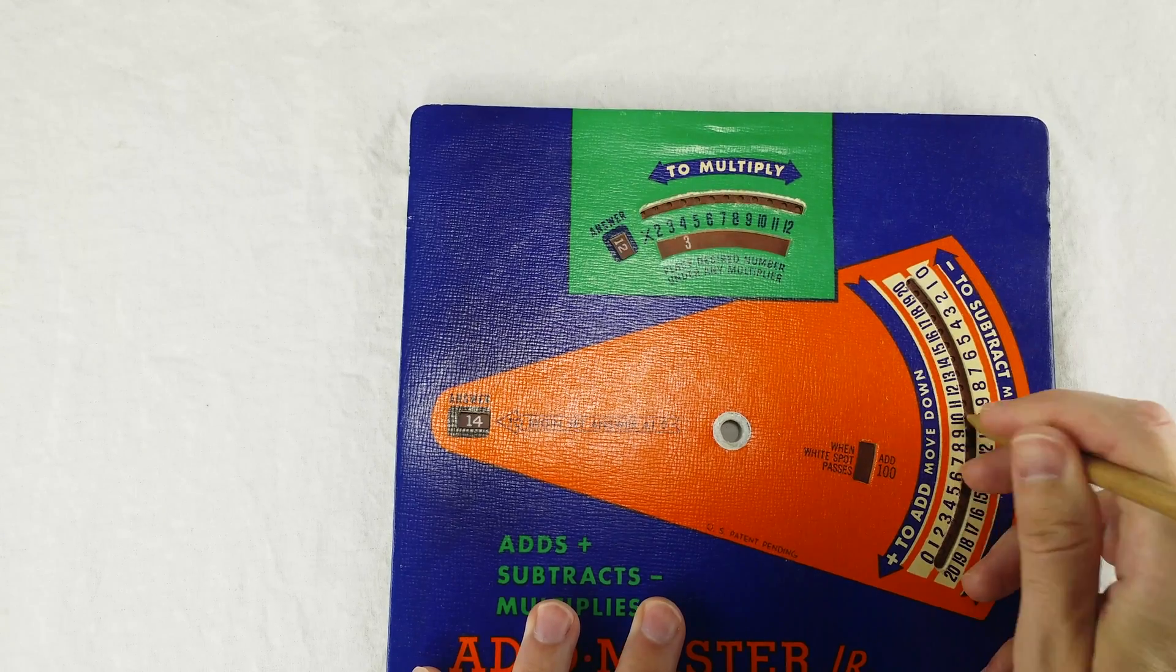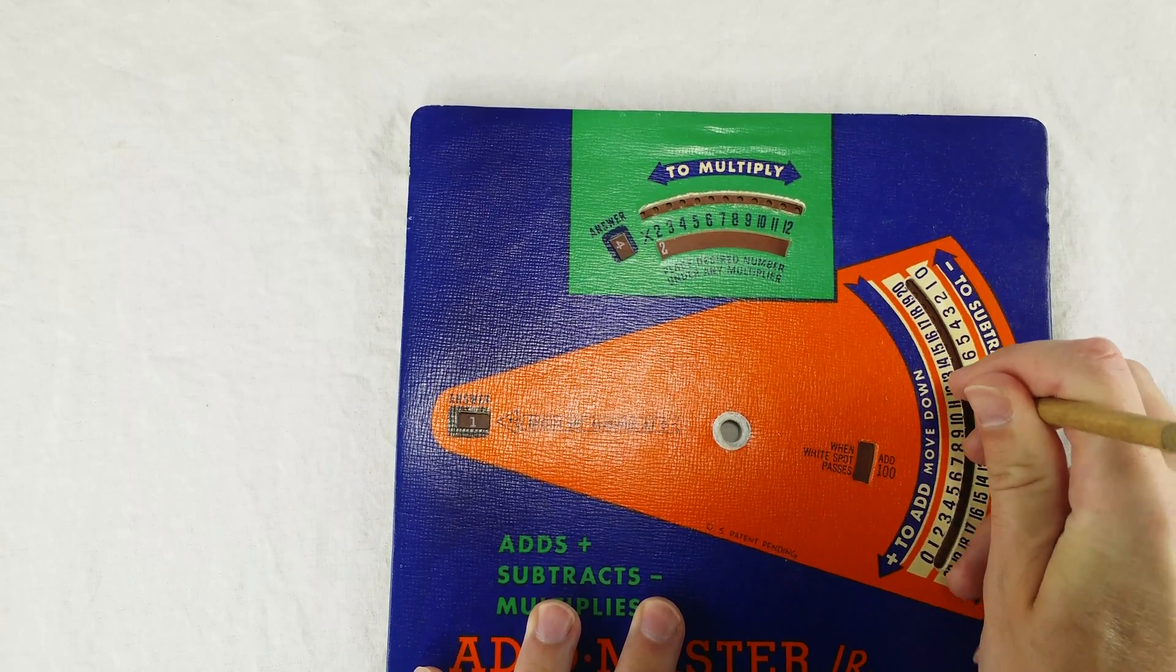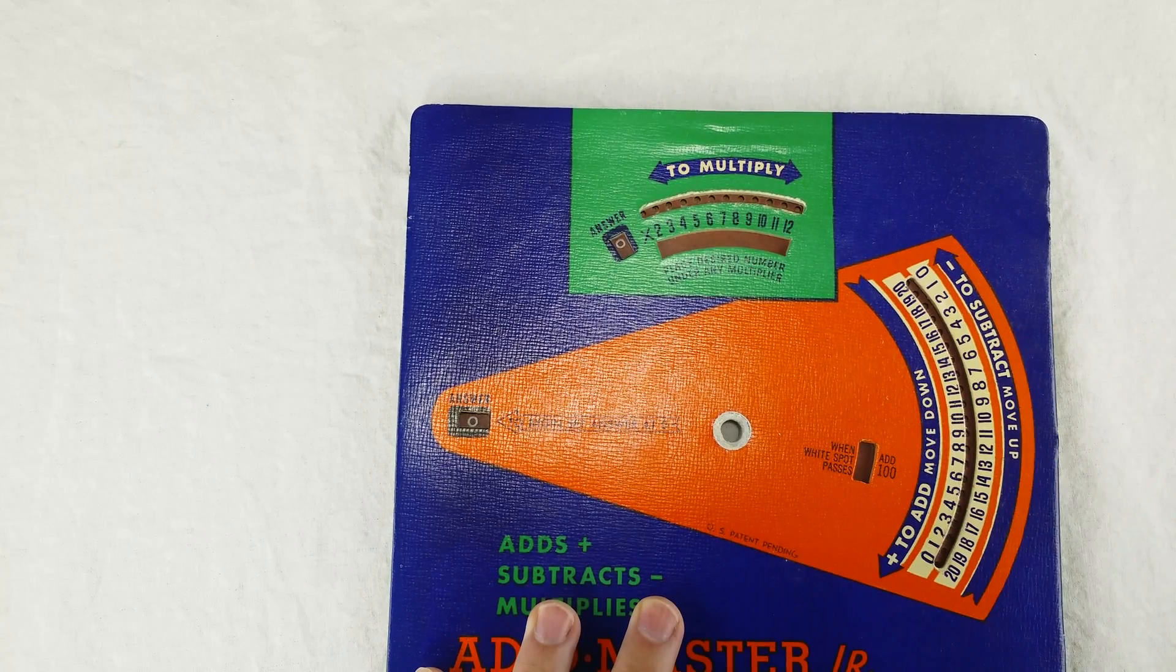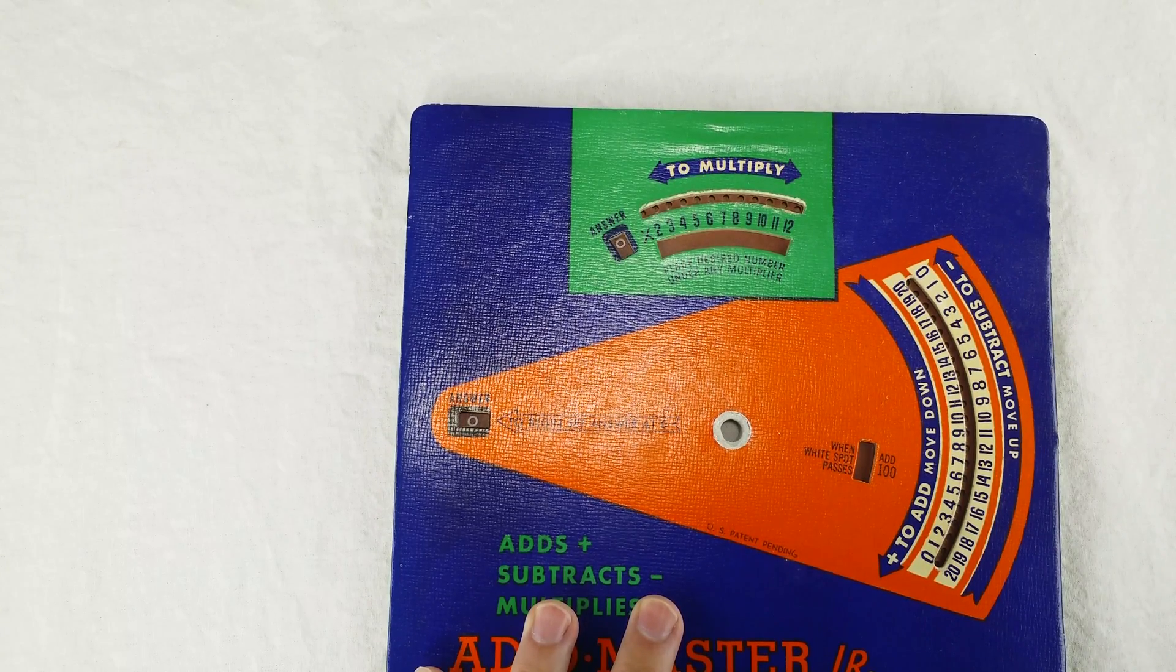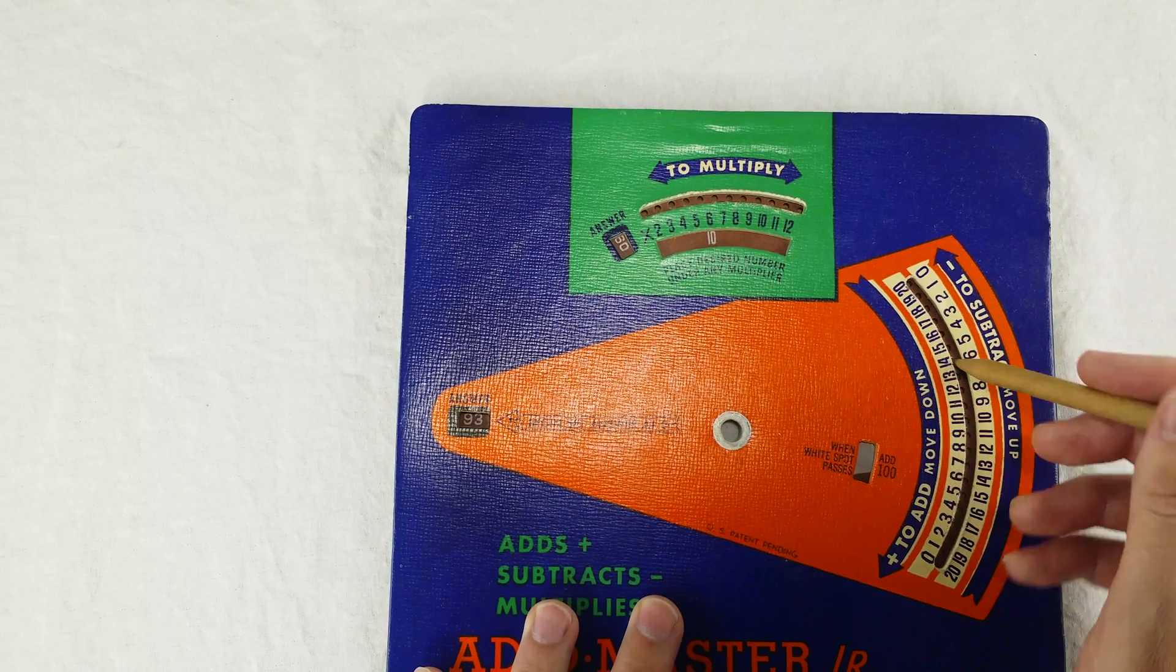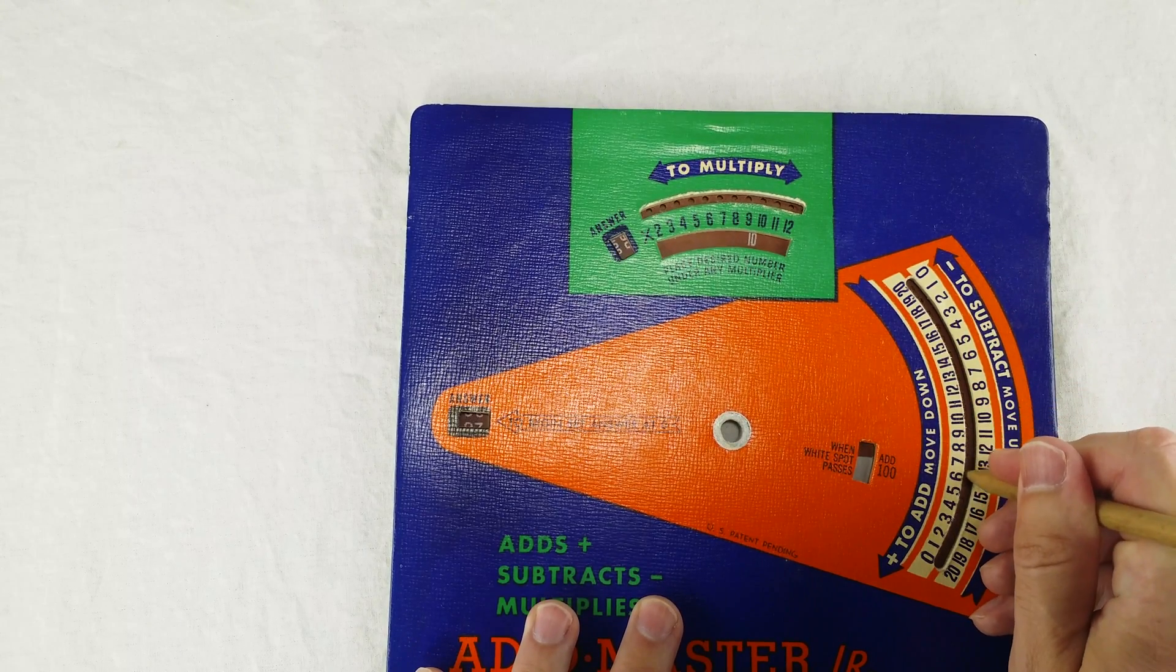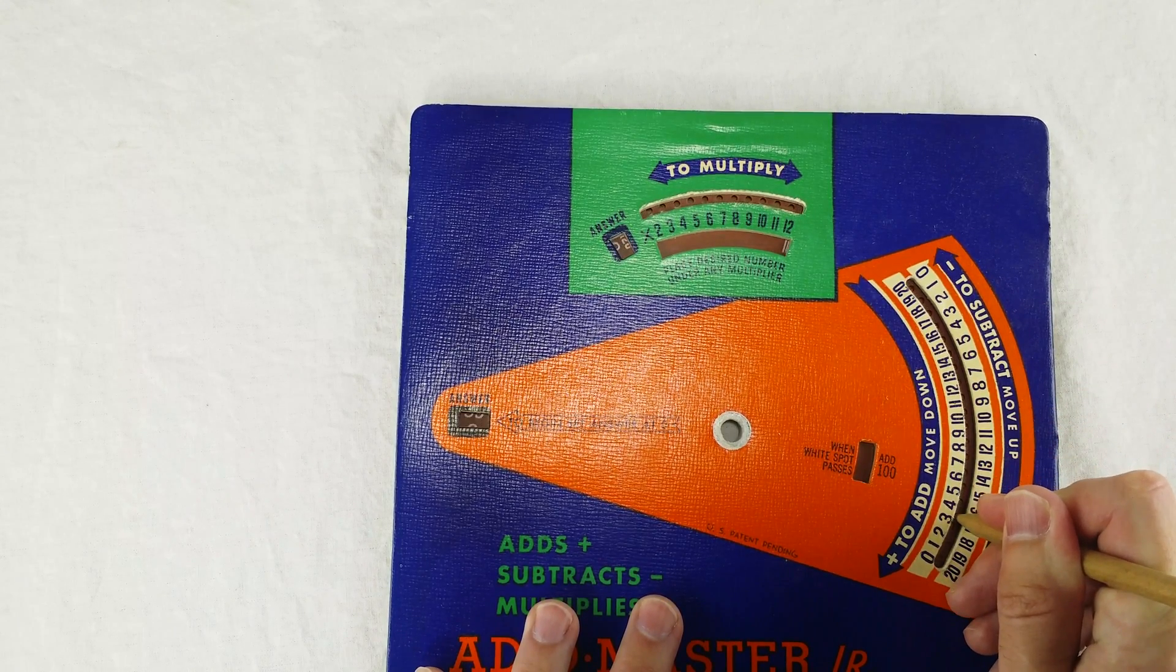There's no way to reset the answer to zero automatically. You just have to dial it back yourself. And also the answer only shows up to 99 before rolling over back to zero. This means if your total exceeds 100, you'll have to keep track of the hundreds digit yourself.